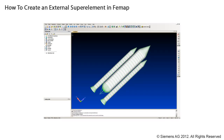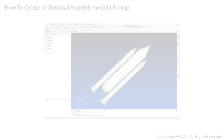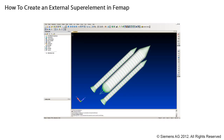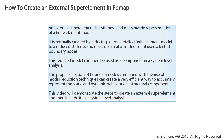This example will demonstrate the steps required to create an external super element using FEMAP version 10 and NX Nastran version 8.1. An external super element is a stiffness and mass matrix representation of a finite element model. It is normally created by reducing a large detailed finite element model to a reduced stiffness and mass matrix at a limited set of user-selected boundary nodes. This reduced model can then be used as a component in a system level analysis.